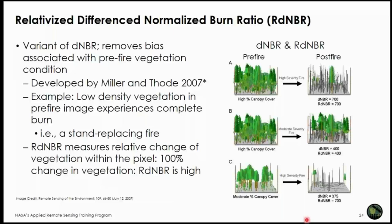A variant of dNBR is the Relativized Difference Normalized Burn Ratio (RdNBR), developed by Miller and Thode in 2007. RdNBR attempts to account for differences in vegetation cover between areas, measuring relative change so that areas with high versus low vegetation cover are more comparable. In areas with lower canopy cover, dNBR and RdNBR values can differ significantly. RdNBR is a commonly used method in the United States, though research shows it is not always effective in all vegetation types.